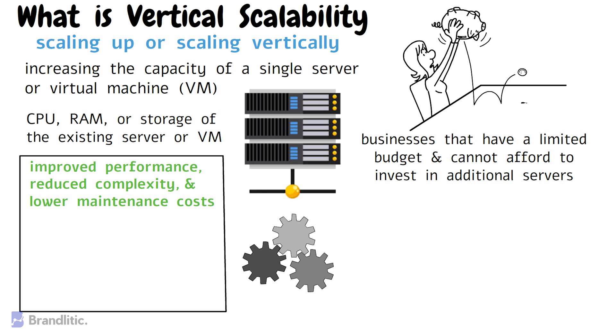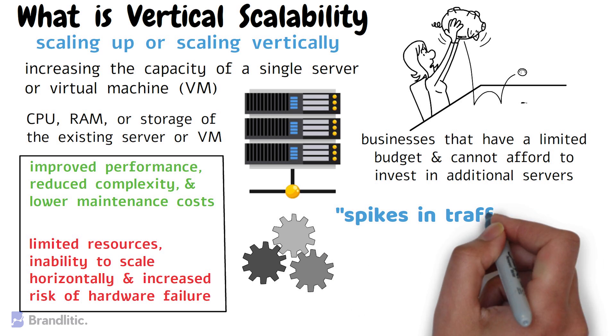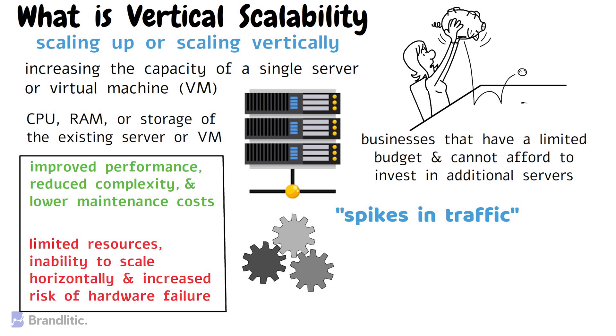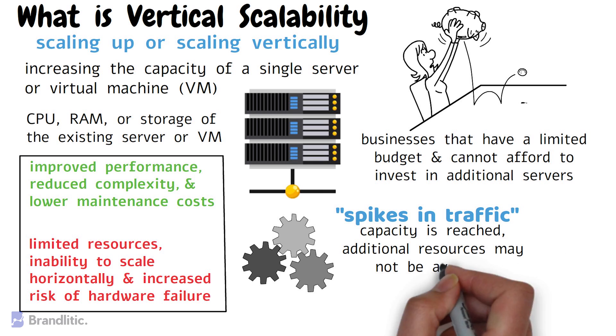However, vertical scaling has limitations as well, including a limited amount of resources available on the server, the inability to scale horizontally, and increased risk of hardware failure. Another potential disadvantage is that it may not be able to handle sudden spikes in traffic, as if the server's capacity is reached, additional resources may not be available, resulting in degraded performance or even system failure.